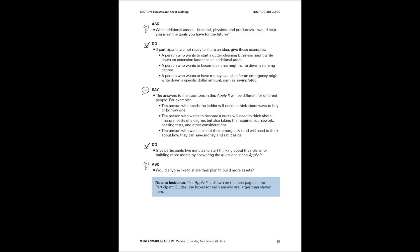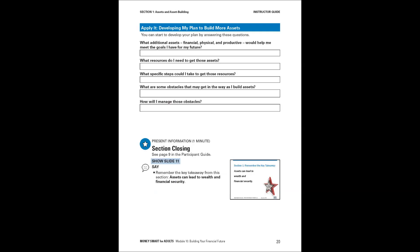Follow the prompt that asks: would anyone like to share their plan to build more assets? This really helps participants think through their situation from the context of the three different asset types. Then wrap up the section by reinforcing the key takeaway: assets can lead to wealth and financial security.